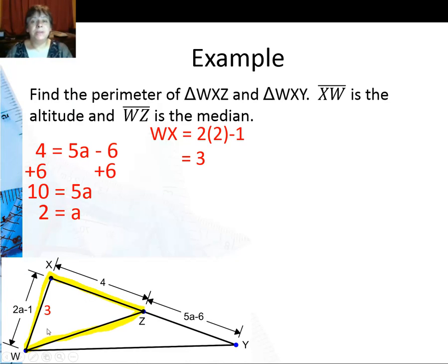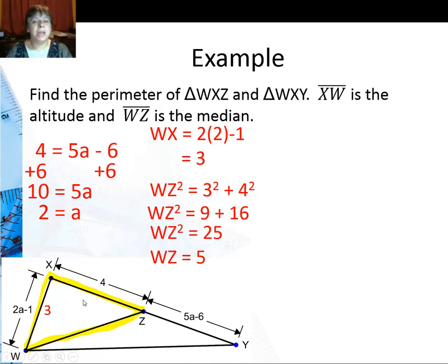Now this gives me triangle WXZ so I can find the perimeter. Well first of all I need to find WZ. So I'll use the Pythagorean theorem since I know that's the right angle. WZ is 3 squared plus 4 squared. You might remember this as one of our triples. It's a 3, 4, 5 triangle.